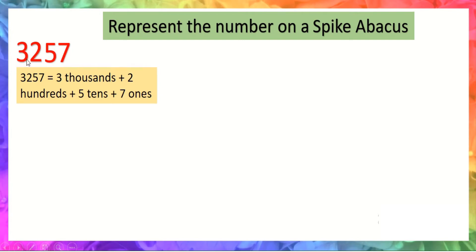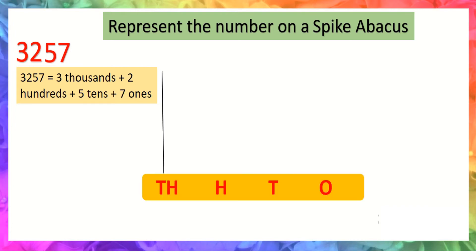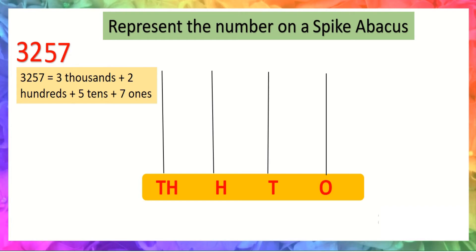Now see another example. The number is 3,257. Again, the first step is to draw a spike abacus. The number consists of four digits, so we need to draw four spikes: one, two, three, four. Then represent the place value: ones, tens, hundreds, thousands. At ones place the digit is seven.